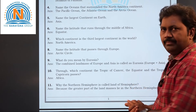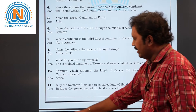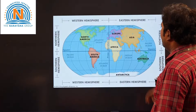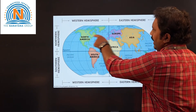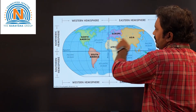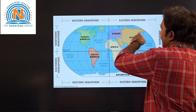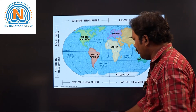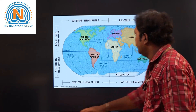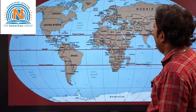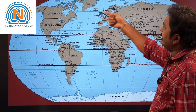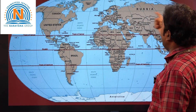Now the eighth question: name the latitude that passes through Europe. The answer is the Arctic Circle. Let us have a look here. See, this is Europe and here is a latitude passing through it — this is called the Arctic Circle. And this one is the Tropic of Cancer. I will show you one more picture. See here — the Equator, Tropic of Cancer, and in Europe a latitude is passing, which is called the Arctic Circle.